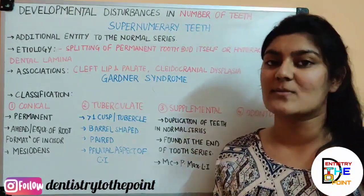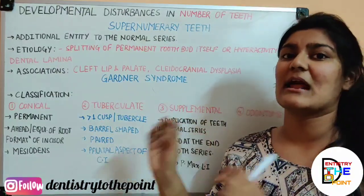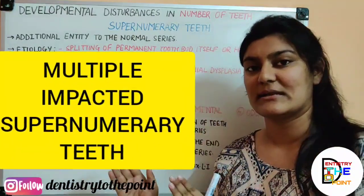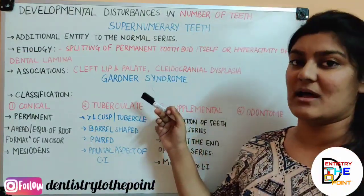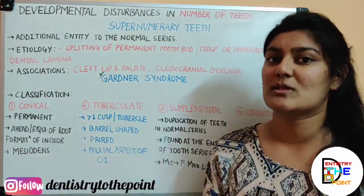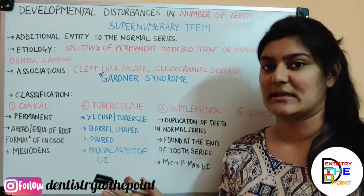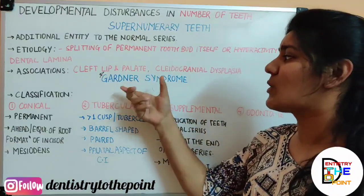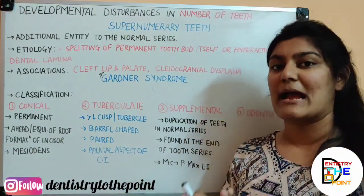The most common MCQ topic here is Gardner's syndrome. Gardner's syndrome is characterized by multiple impacted supernumerary teeth. Other features include polyposis of the large intestine and dermoid cysts, but the characteristic finding that associates it with supernumerary teeth is multiple impacted supernumerary teeth.